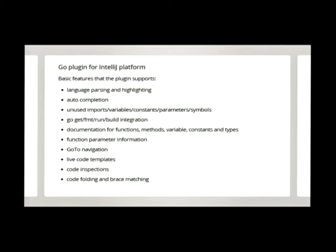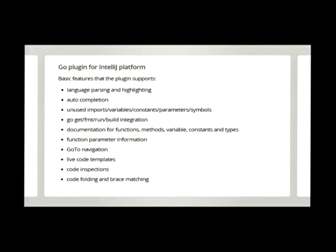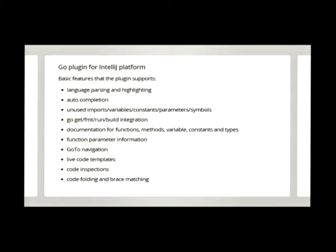About one year ago the Go plugin was working — ish, let's say — but due to a version upgrade it broke, so that's when I started working on it. The basic features currently working most of the time are: language parsing and highlighting, auto-completion, import and unused variable detection, parameter detection, GoGet integration, GoFmt, GoBuild, GoRun, and displaying documentation for various functions.